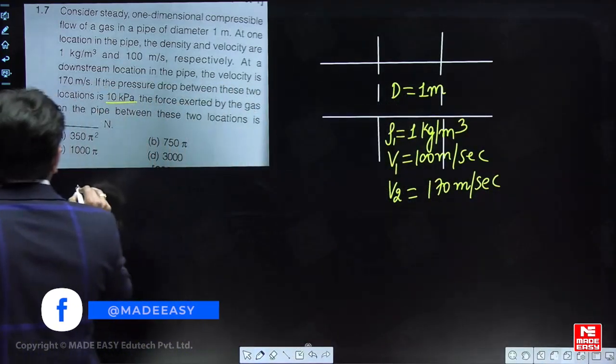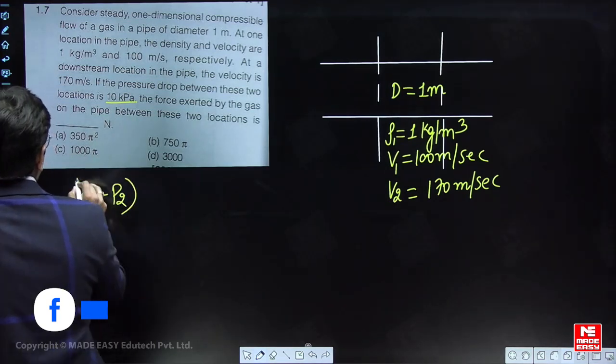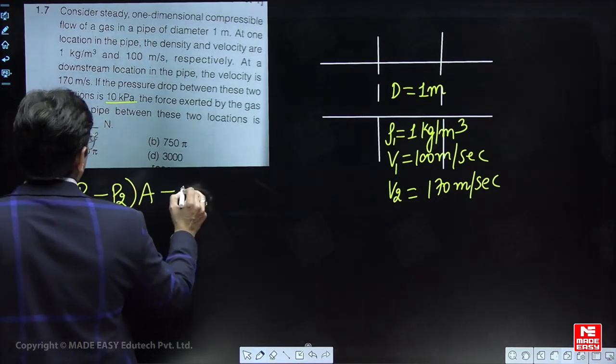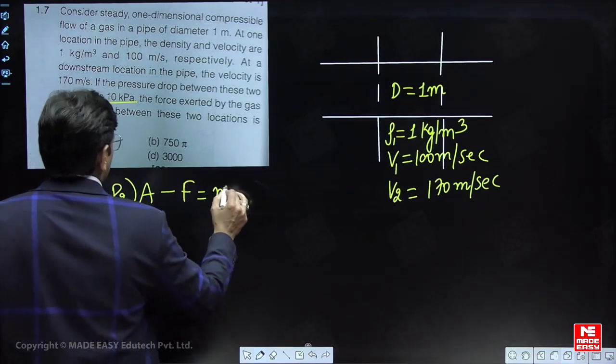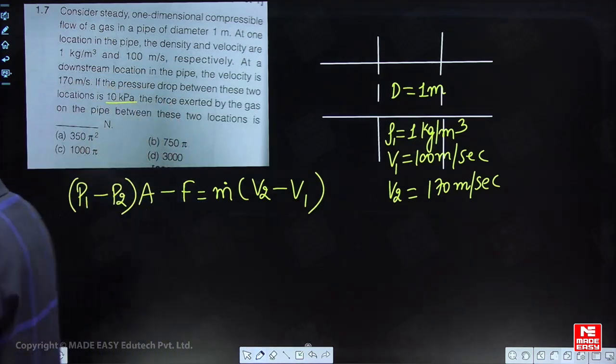In this question we will use the momentum equation: (P₁ - P₂)A - F = ṁ(V₂ - V₁).